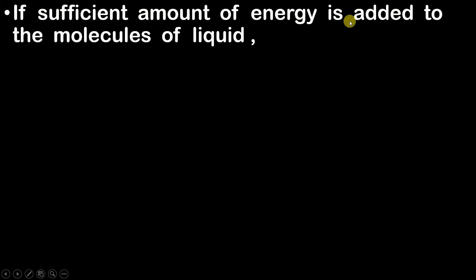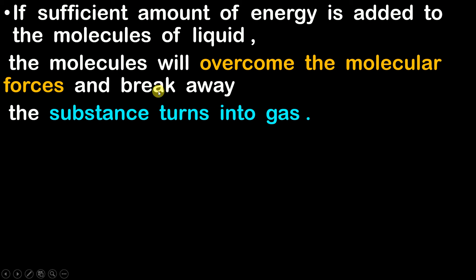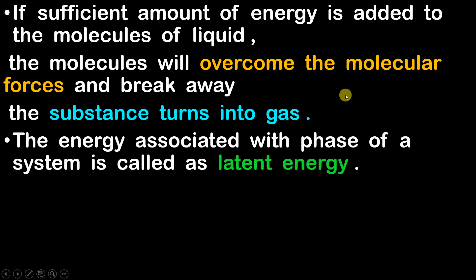The fifth microscopic form of energy is latent energy. If sufficient energy is added to the molecules of a liquid, the molecules will overcome the intermolecular forces and break away, turning the substance into gas. There is a phase change taking place — the substance changes from the liquid state to the gaseous state. The energy associated with the phase of the system is called latent energy.